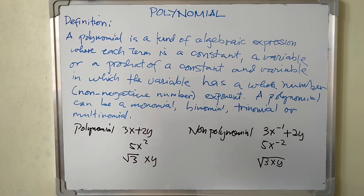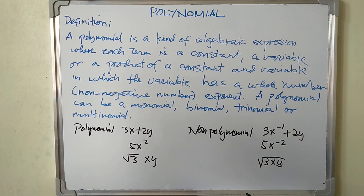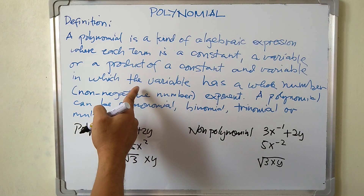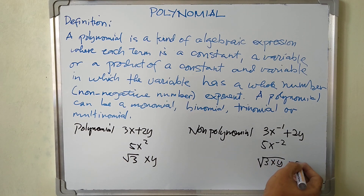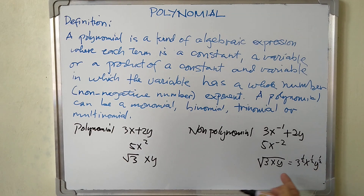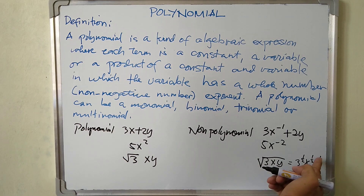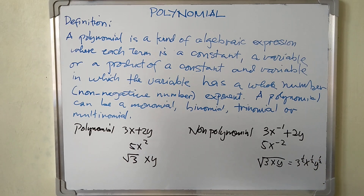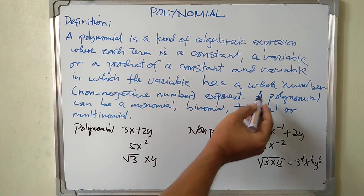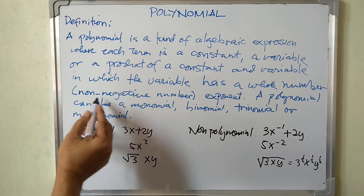However, the square root of 3xy — where the variables are inside the radical symbol — is not a polynomial. We can rewrite this radical form as 3 raised to one half, times x raised to one half, times y raised to one half. The exponents here are one half, which is not a whole number, therefore this is not a polynomial. A radical with variables inside converts to fractional exponents, violating the definition.